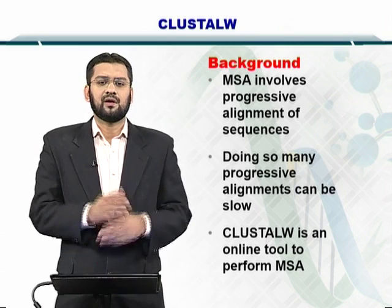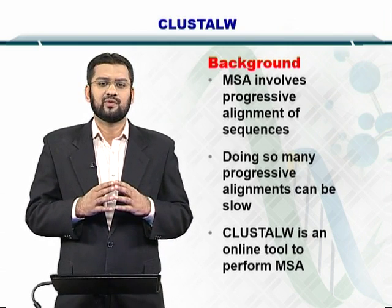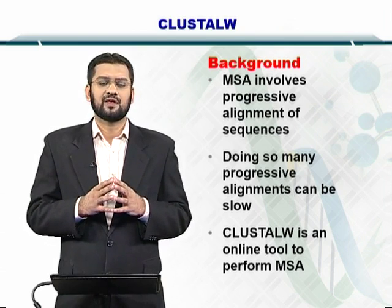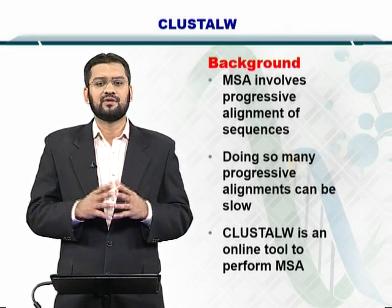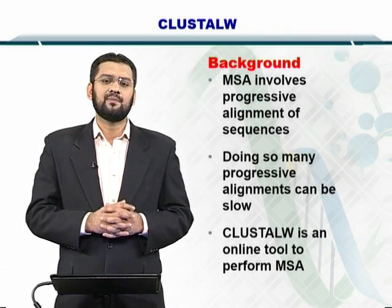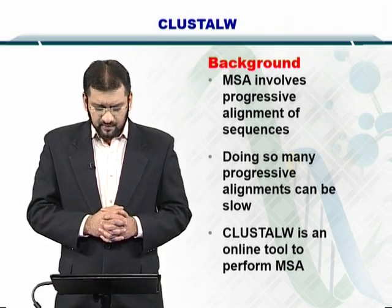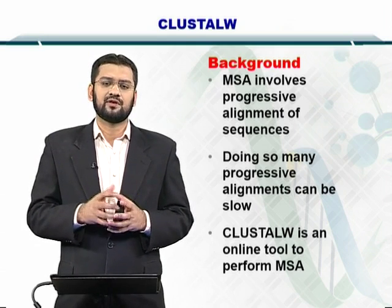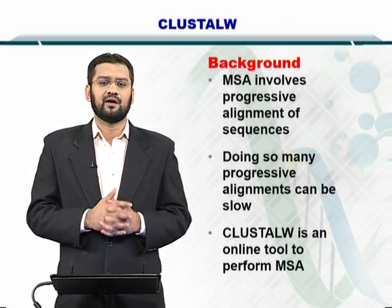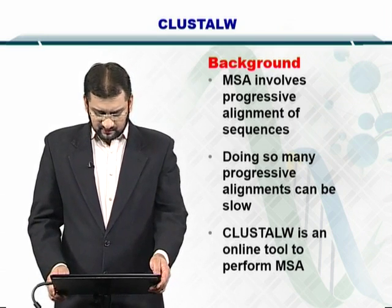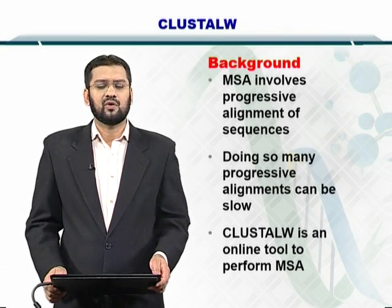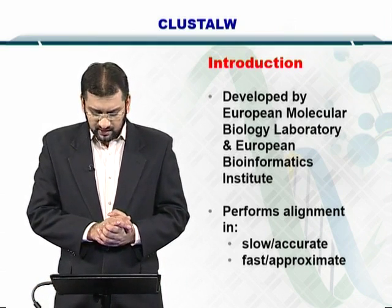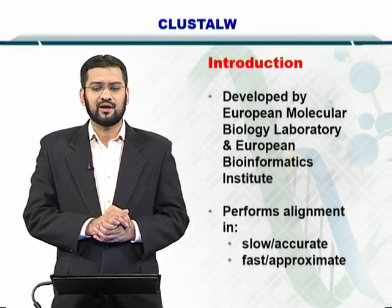Multiple sequence alignment involves alignment of sequences in such a way that you can extract the most similar sequences first, and then repeat this process for other sequences such that all the sequences end up in an alignment. Progressive alignments are used — this entire process is essentially an iterative process, and therefore we call it the progressive alignment. Towards doing this online, you have ClustalW, which is an online tool developed by EMBL and EBI, that is the European Molecular Biology Laboratory and European Bioinformatics Institute.